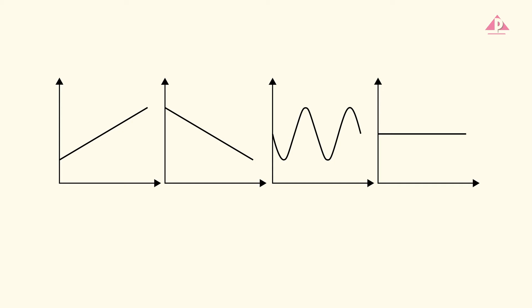Describe the trends shown in the graph phase by phase. For example, a quantity may increase, decrease, fluctuate, or remain constant.